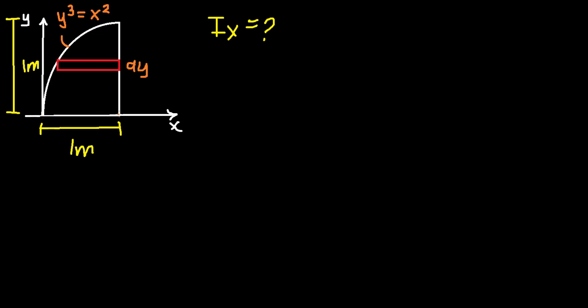Over here we don't know this length, but we do know the total length of this figure, which is 1 meter. We can say that this one is our unknown X, so 1 minus our unknown X will give us this length. The area of this differentially small element is length multiplied by width, so it's (1-x) dy.